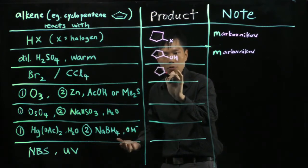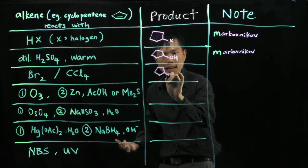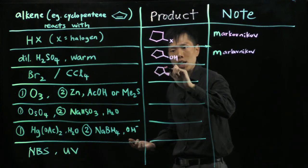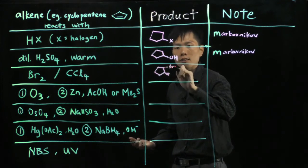So the Br will be on the opposite side. That means one of the bonds here must be wedge, the other one must be hash lines. Br-Br.